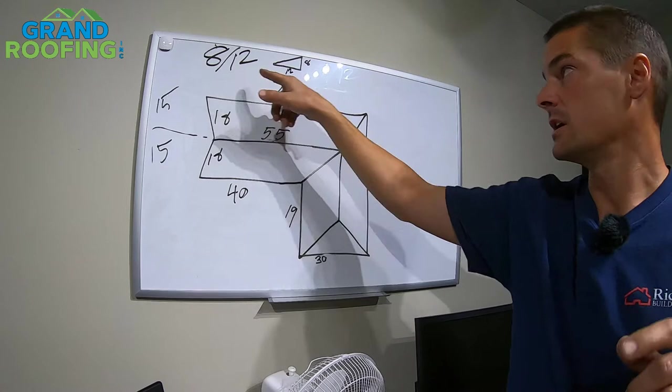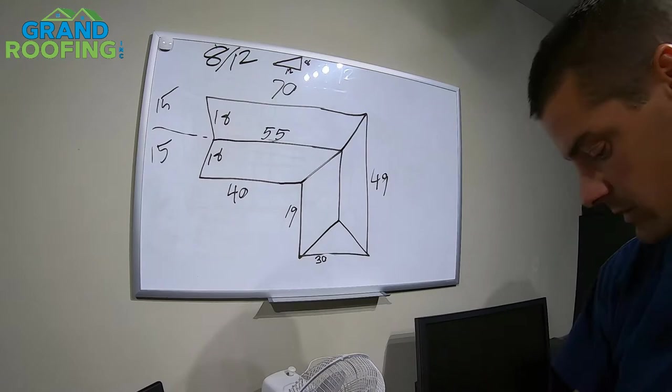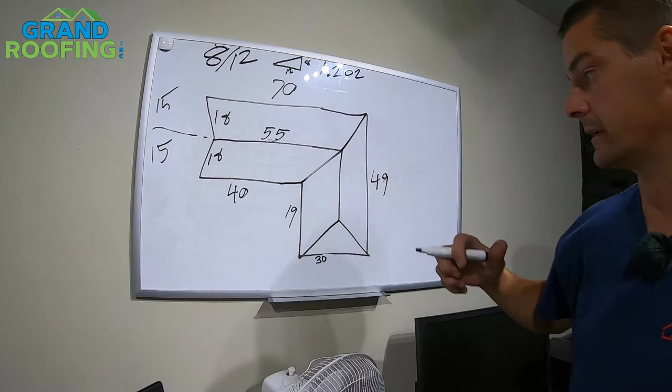So with this roof, it is an 8/12 pitch. What is an 8/12 pitch? Well, for every 12 inches in, you've got an 8 inch rise, and I'll explain that why here in a minute. Which by the way, that multiplier, while I'm thinking about it, is 1.202. That'll come in handy here in a minute.